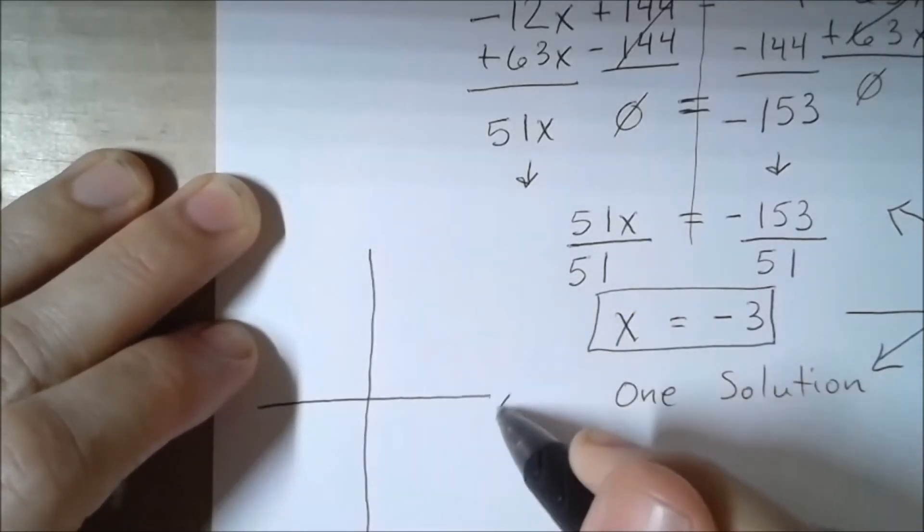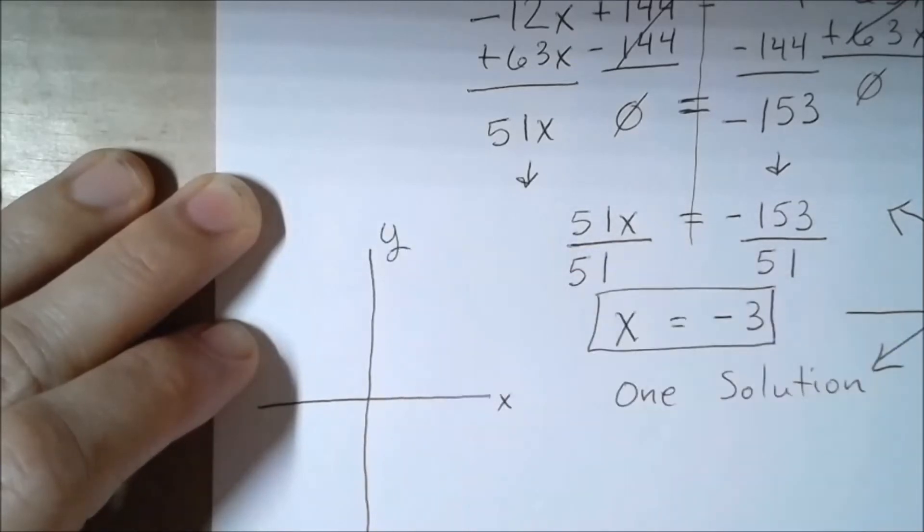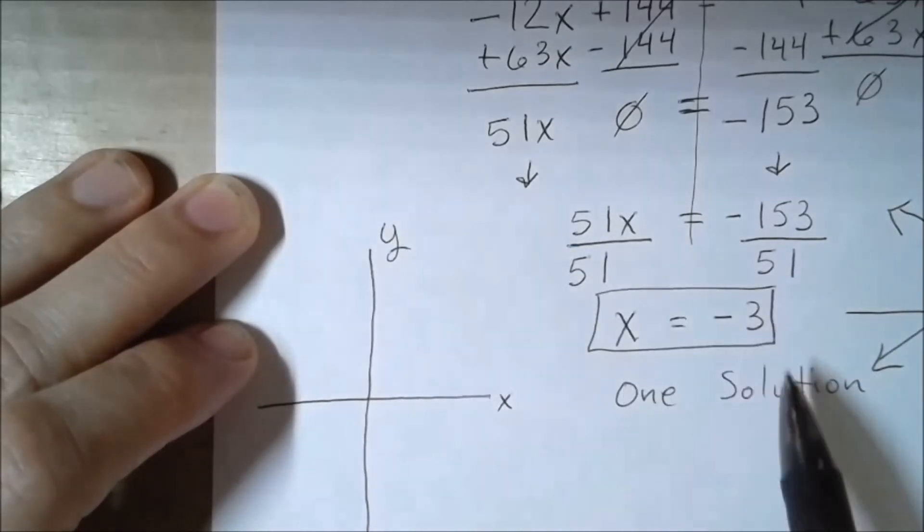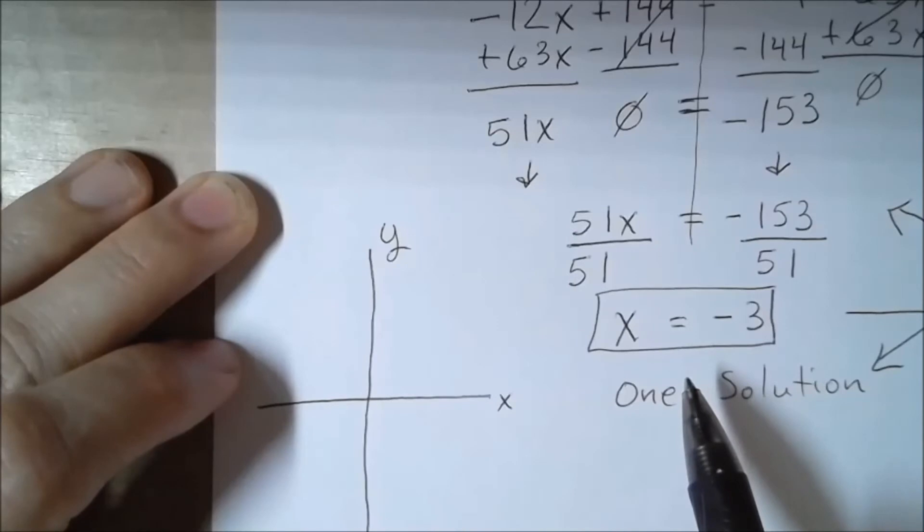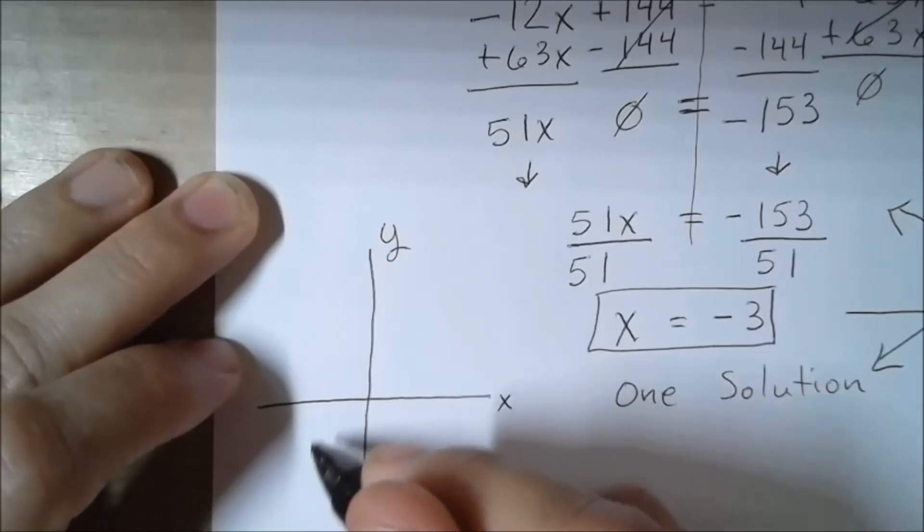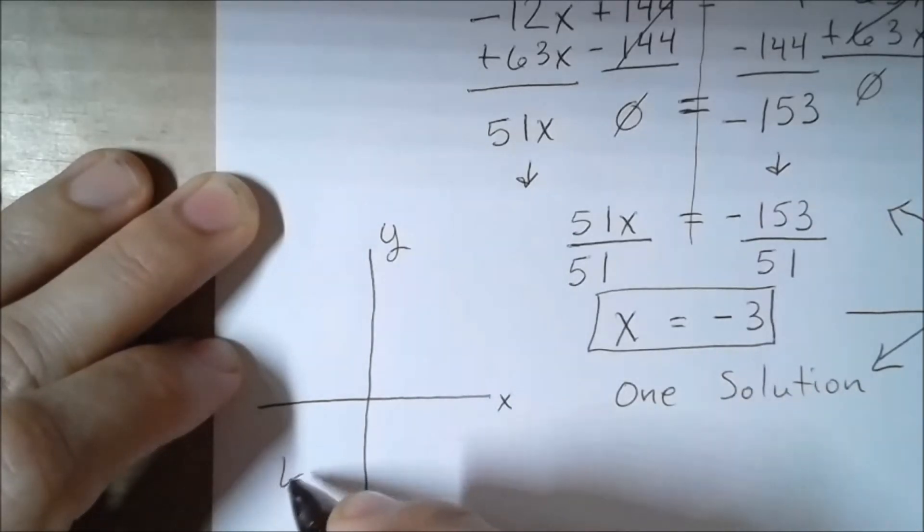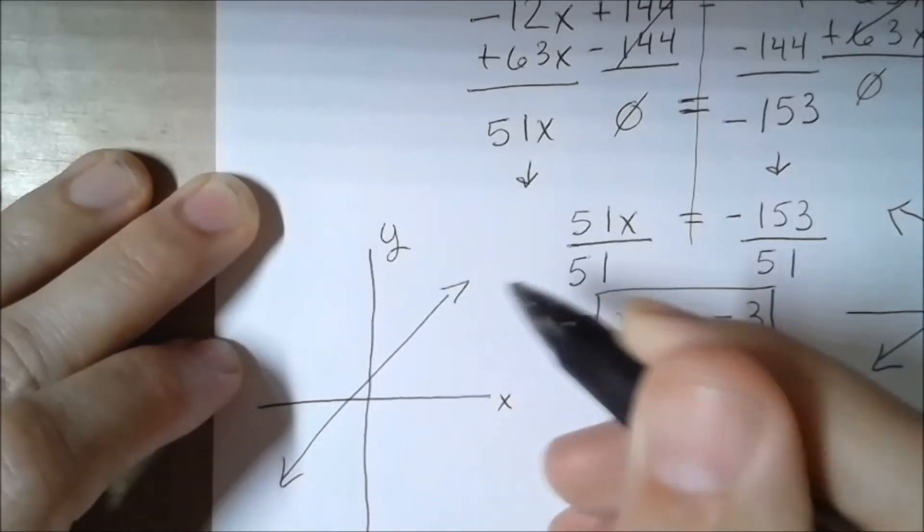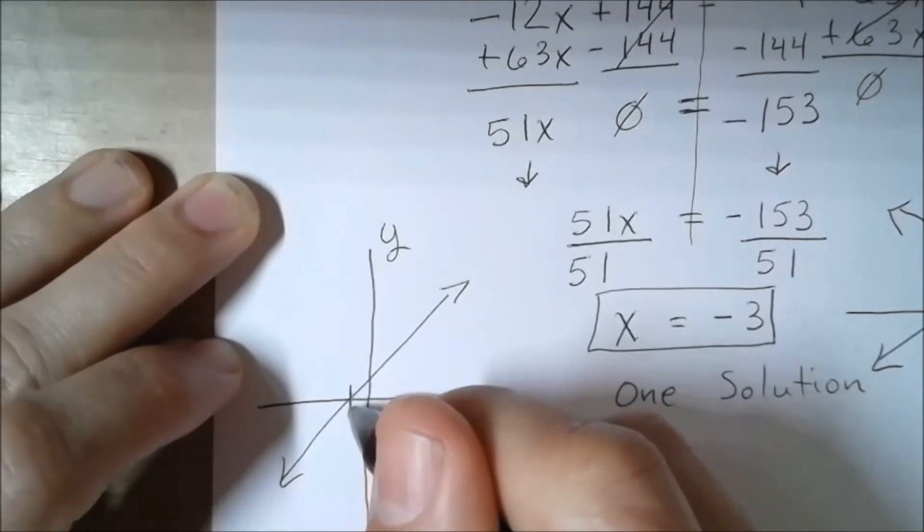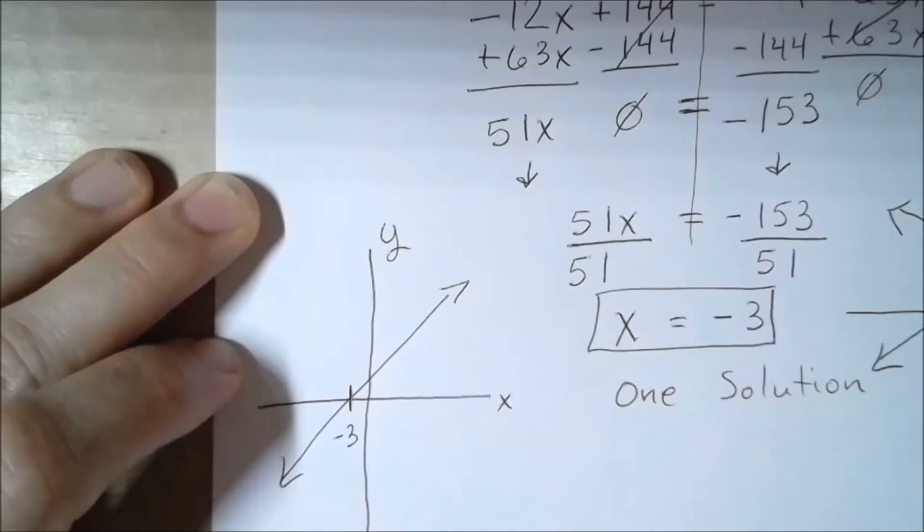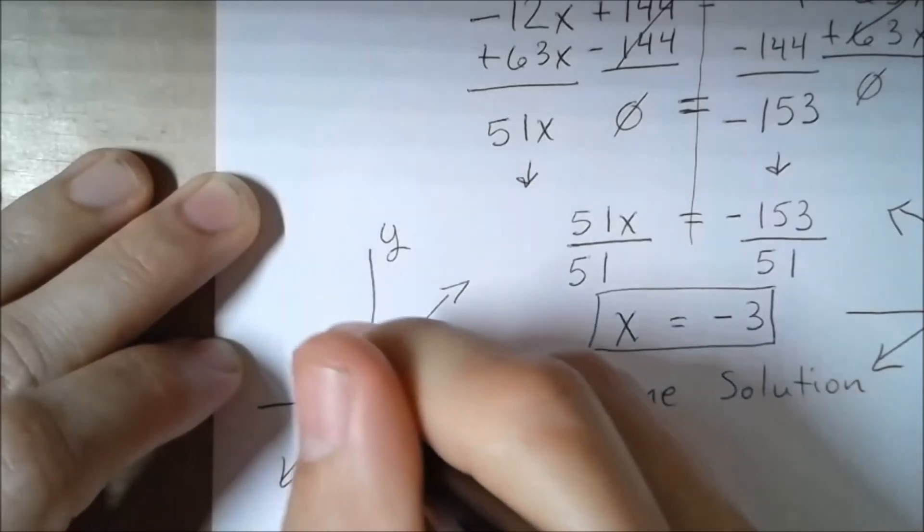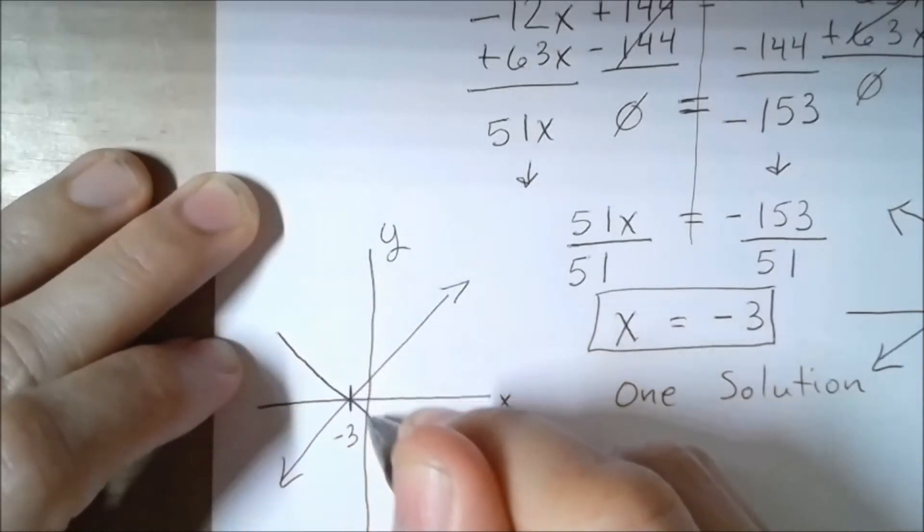So if we wanted to look at this graphically, I could draw a graph over here for you. Notice this is my x-axis, this is my y-axis. And since x is negative 3, that one solution is the point at which my graphs cross. So if we were to draw this out graphically, let's imagine at this point right here is negative 3 on the x-axis, and my graphs would cross right at negative 3.